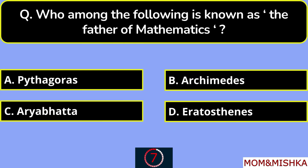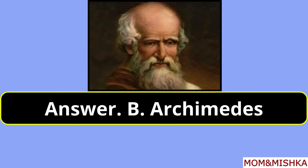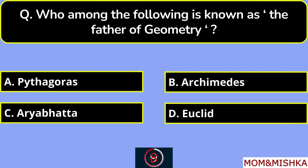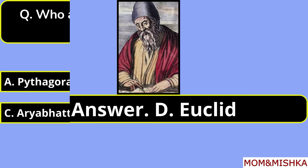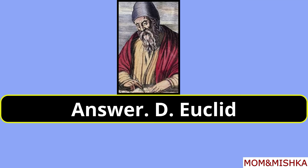Who among the following is known as the father of mathematics? The answer is Archimedes. Option B. Who among the following is known as the father of geometry? The answer is Euclid. Option D.